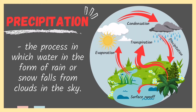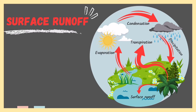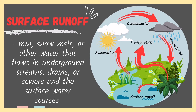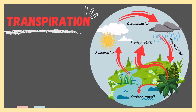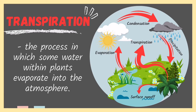Precipitation is the process in which water in the form of rain or snow falls from the clouds in the sky. Rain is the most common form of precipitation. Sub-surface and surface runoff is the rain, snowmelt, or other water that flows in underground streams, drains, or sewers, and into surface water sources. Transpiration is the process in which some water within plants or trees evaporates into the atmosphere.